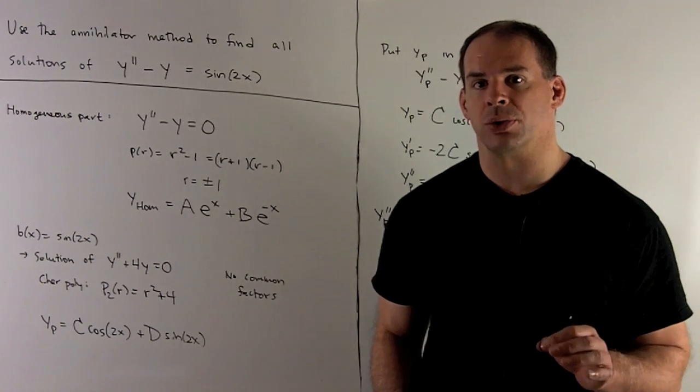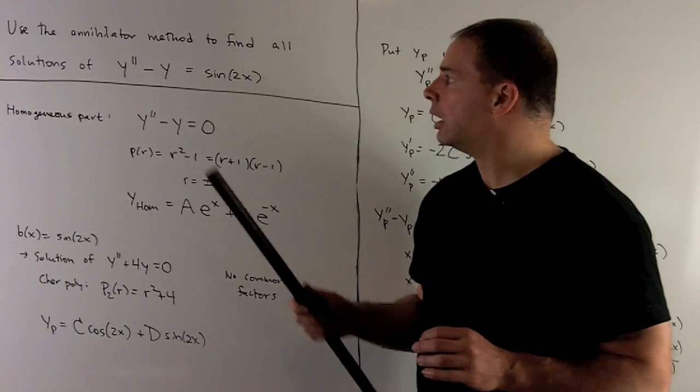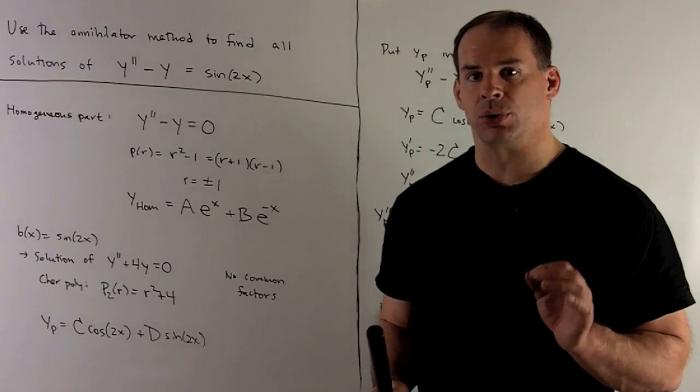Use the annihilator method to find all solutions of a linear ODE, y double prime minus y equals sine of 2x.